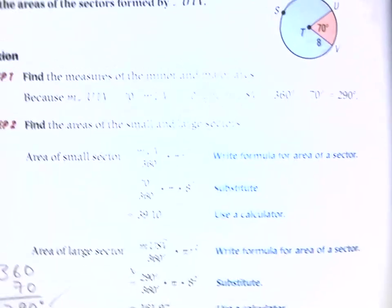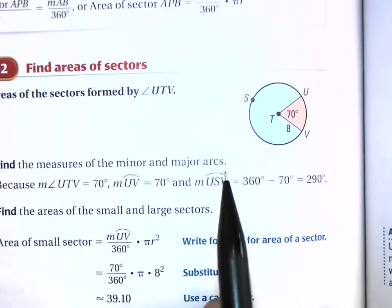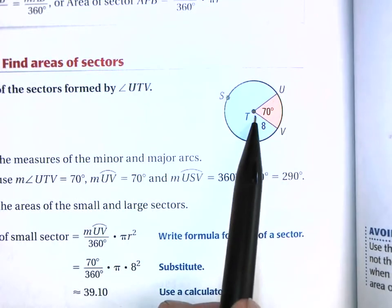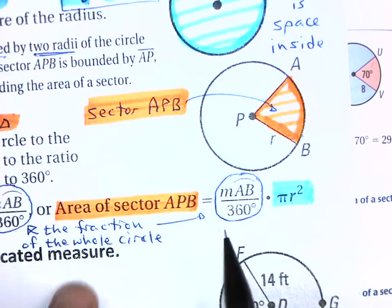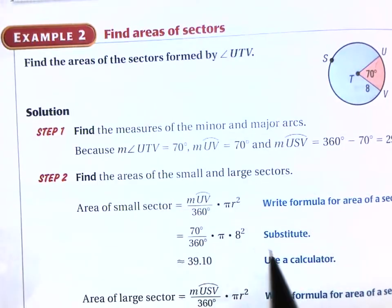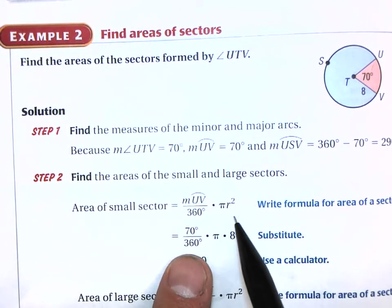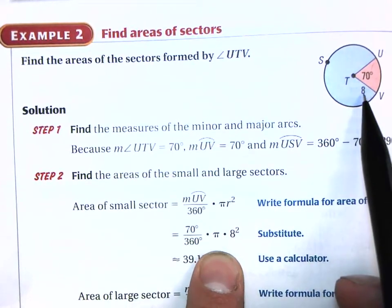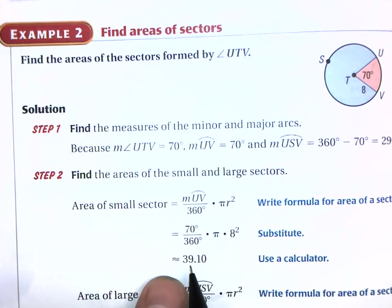Let's do a few problems from the textbook. They want us to find the area of this sector. They give us that the central angle is 70 degrees, and the radius is 8. So the area of the sector equals the fraction of the whole: 70 over 360 times πr² with r = 8. Be careful when you plug that in your calculator, and once you round it, you get approximately 39.10.